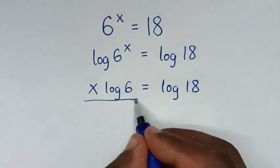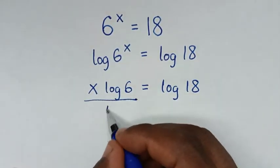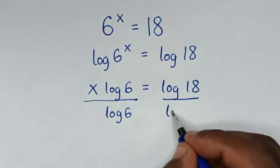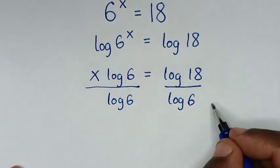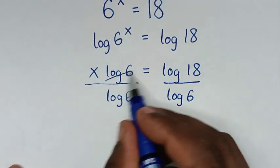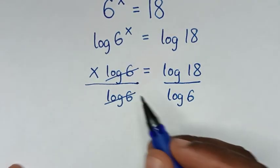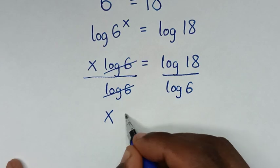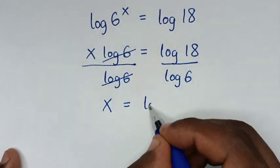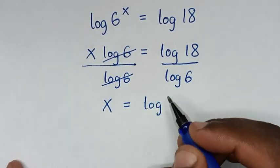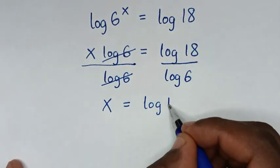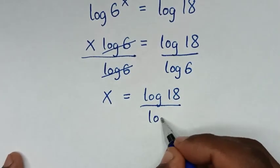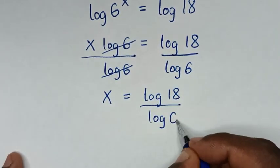Then, we will divide by log of 6 in both sides. So, this log of 6 cancels this log of 6, and it will be x is equal to log of 18 over log of 6.